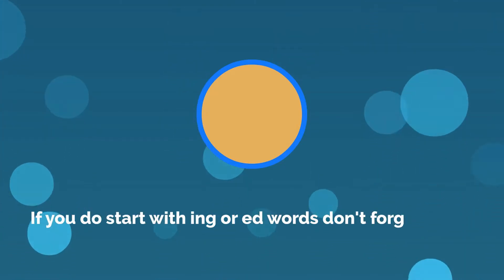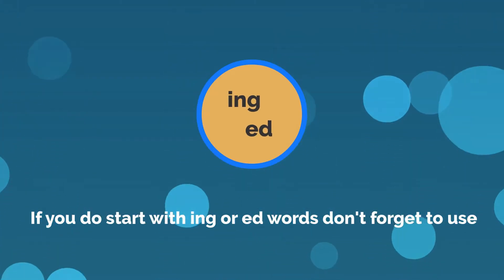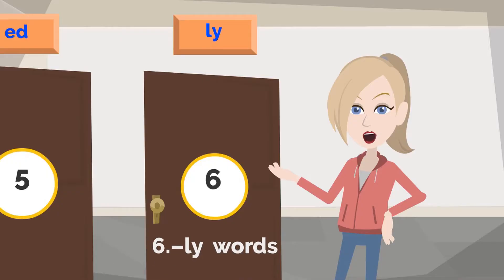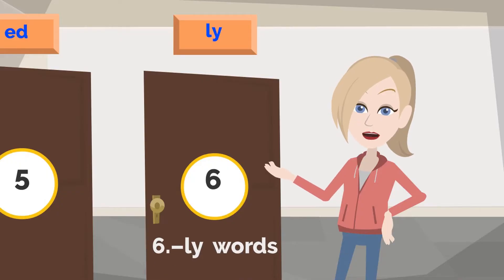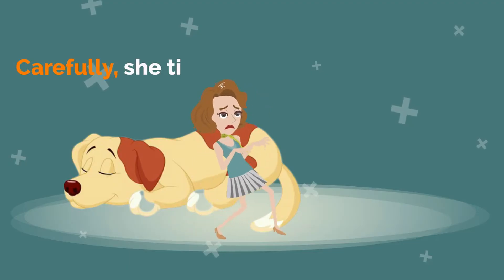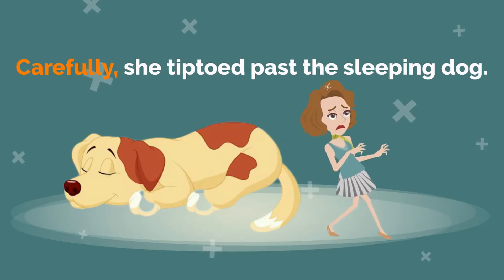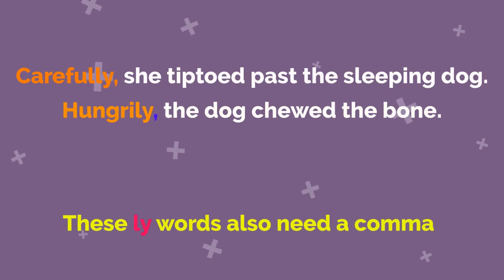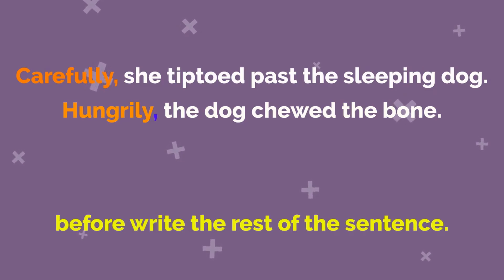If you start with ING or ED words, don't forget to use a comma before you complete the sentence. 6. LY words. Finally, the last way to start a sentence is using LY words. For example: Carefully, she tiptoed past the sleeping dog. Hungrily, the dog chewed the bone. These LY words also need a comma before you write the rest of the sentence.